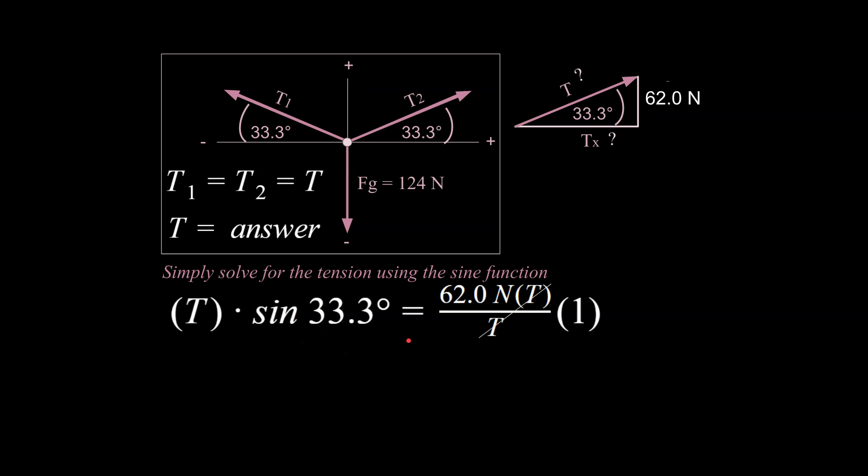So this is where we left off right here. And these cancel out. And I'm just going to take it one step further, solve for t by dividing sine of 33 on both sides, which is very straightforward. And then I end up with my answer over here. So that's how you would go about solving one of these problems of tension in two dimensions.